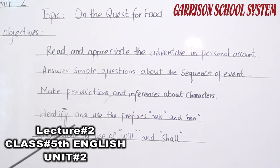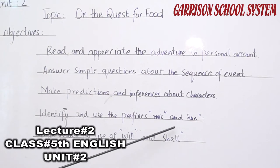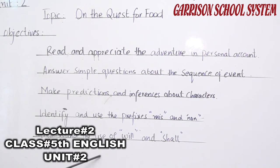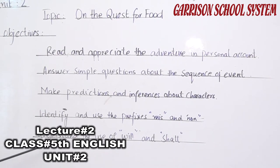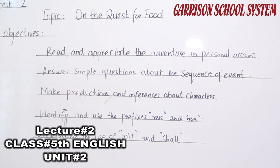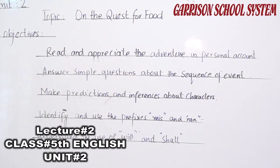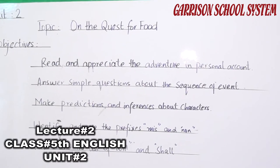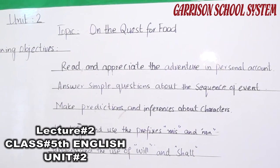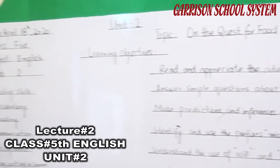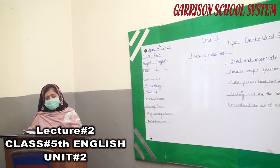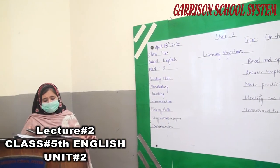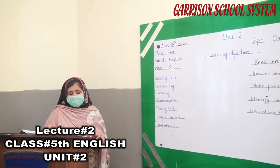You will identify and use the prefixes 'mis-' and 'non-'. You will also understand the use of 'will' and 'shall' — will and shall are helping verbs. You will be able to understand their use for the future, or to put stress on your thinking using the helping verbs will and shall.